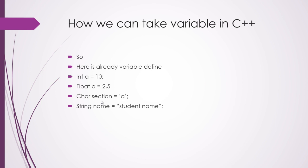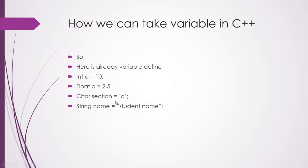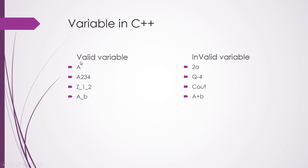Now let's look at valid and invalid variables in C++. For a valid variable name — like int a equal to 10 — 'a' is the variable name. Valid variable names contain no numeric prefix, no minus or plus signs. Examples of valid names include: a, a2, a234z, _1, _2, a_b — you can use these to store any type of value.